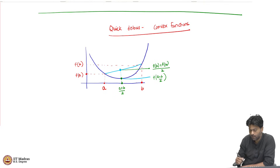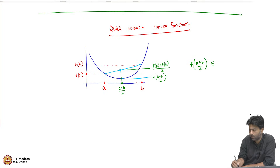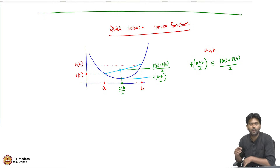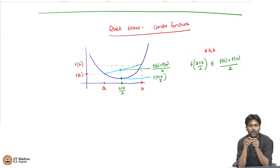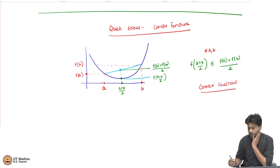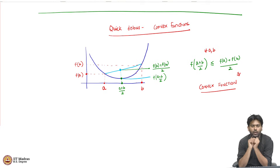From this picture we see that f((a+b)/2) is less than or equal to (f(a) + f(b)) / 2. If this happens for every a and b — that the linear interpolation at two points has a strictly higher value than the function itself — then such a function is called a convex function. This should happen for every choice of a and b.